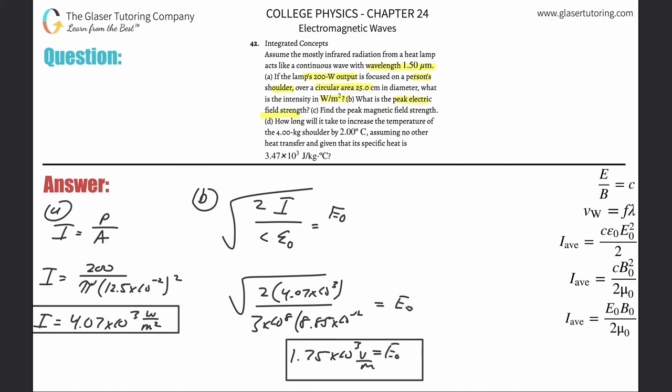That takes care of letter B. Now letter C: Find the peak magnetic field strength. We're going to take the easy route here. Electric field over magnetic field is equal to the speed of light. To find the magnetic field, just cross multiply.